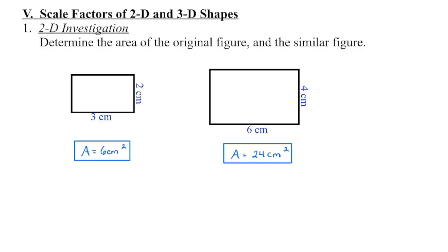The area of my original rectangle, when I multiply the base times the height, is 6 square centimeters. The area of my new figure, when I multiply the base times the height, is 24 square centimeters. I can see that the figures are similar because in each case I'm multiplying by a scale factor of 2 in order to get the new dimension.